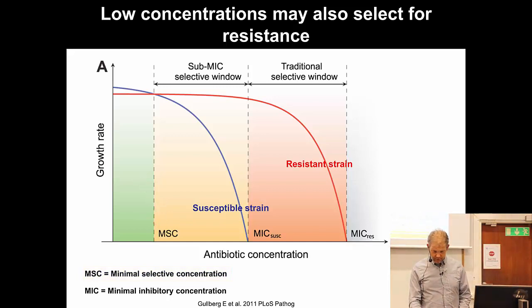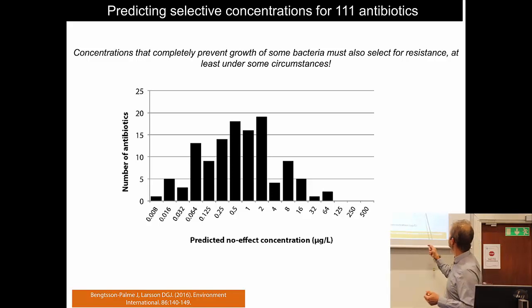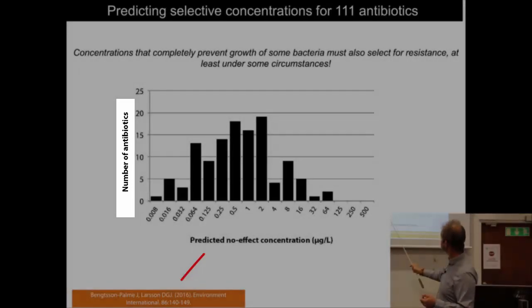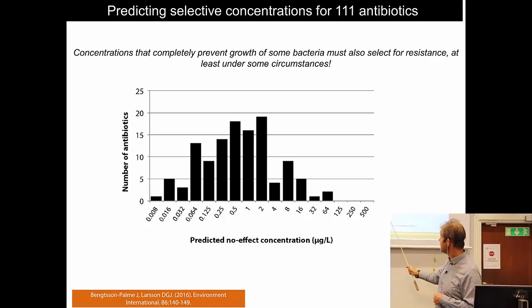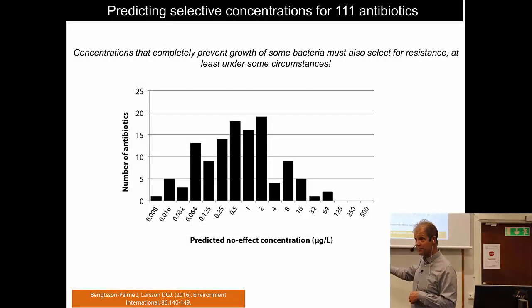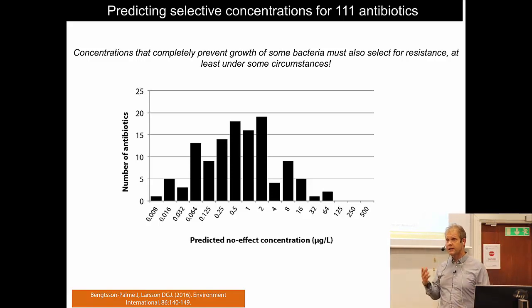We published a paper a few years ago where we predicted how low concentrations could actually select for antibiotic resistance. These predictions are for 111 antibiotics. As you can see, the minimal selective concentration for many is around one microgram per liter — that's a typical concentration. But some are probably down to around 10 nanograms per liter, which is pretty low. These are predictions, but we and others have also done experiments trying to figure out how much antibiotic is actually required in a bacterial community to select for resistance.